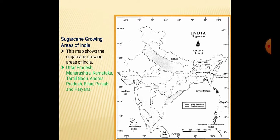Sugarcane growing areas of India — this map shows the sugarcane growing areas. These are Uttar Pradesh, Maharashtra, Karnataka, Tamil Nadu, Andhra Pradesh, Bihar, Punjab and Haryana.